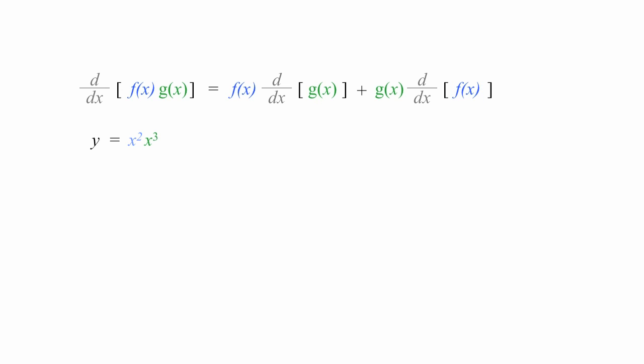Then I'll take the x cubed and put it everywhere I see g of x. There. There. And one more spot right here. The blue x squared is f of x, and the green x cubed is g of x.